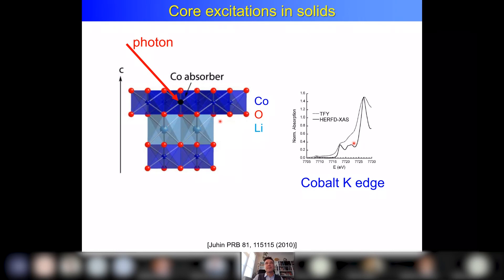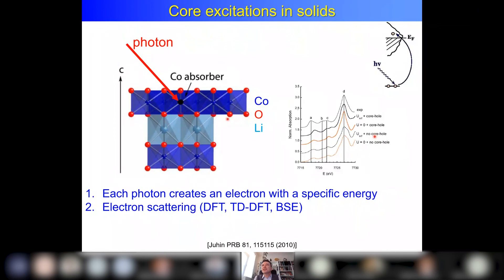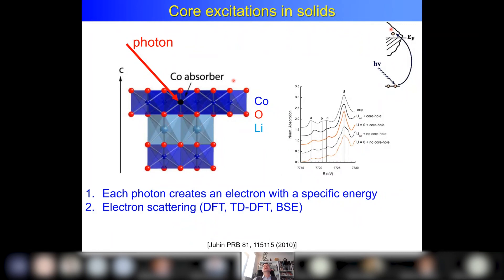The interpretation uses calculated empty densities of states, done here in four different ways — with and without Hubbard U and with and without the core hole. You can roughly explain the experiment this way: take a photon, excite the core electron to the empty states, calculate the empty states. That kind of works.